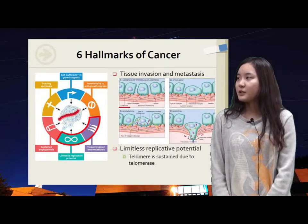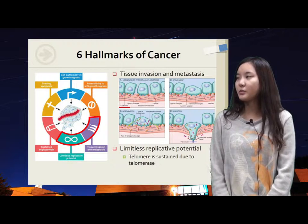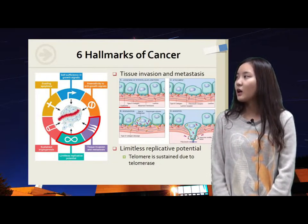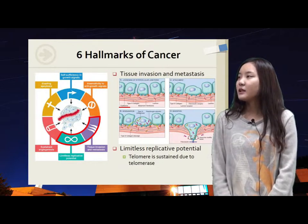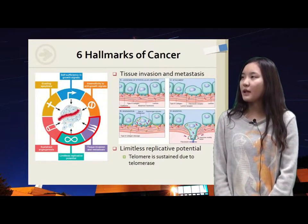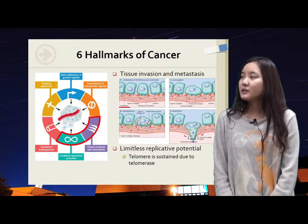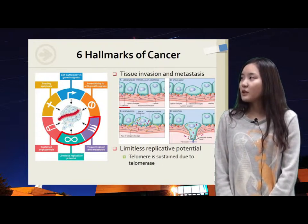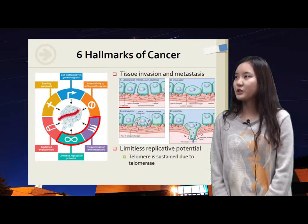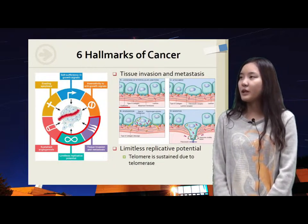For tissue invasion, these four pictures show invasion of extracellular matrix. First, tumor cells loosen their cadherin attachment, then they degrade ECM with proteins like MMP, matrix metalloproteinase. Next, the tumor cell attaches to new ECM components such as laminin or collagens. Finally, migration occurs if the basement membrane cleaves.